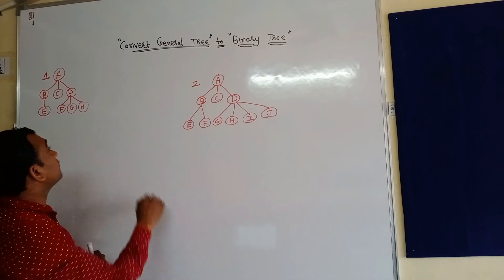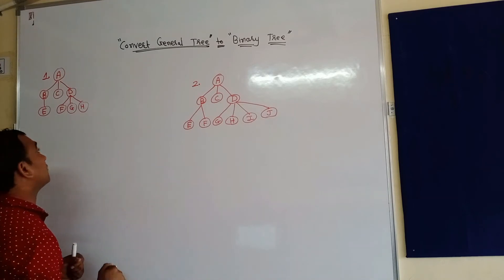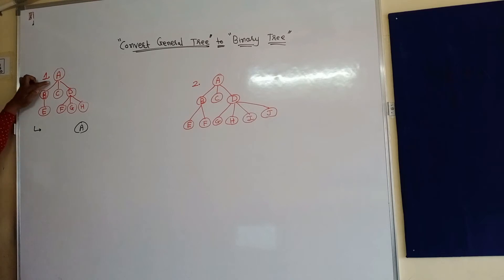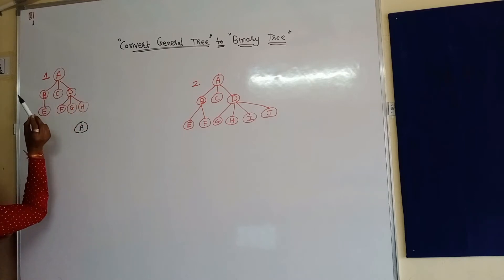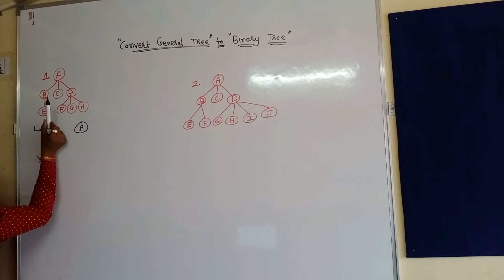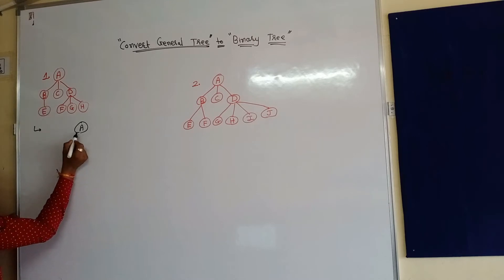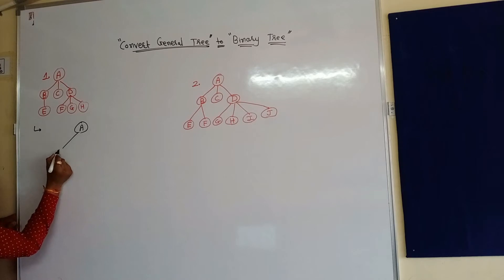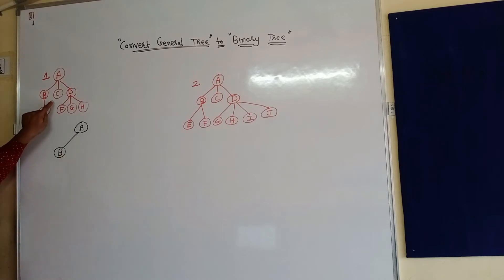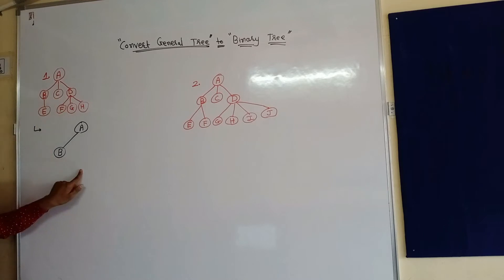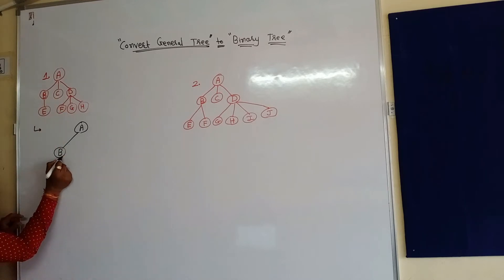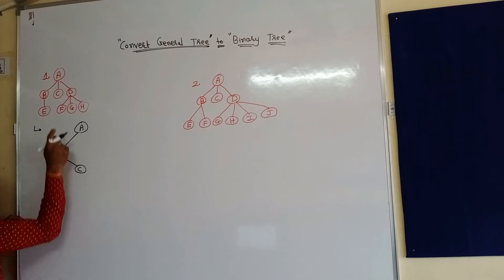Now, how can we convert a general tree into a binary tree? Let's start with the first example. Whatever the root node is, just write it as the root. From that, the first left-most child will be the left node of the root. So B comes here, and whatever the brothers or siblings of B are, they will be placed as the right node of each other.